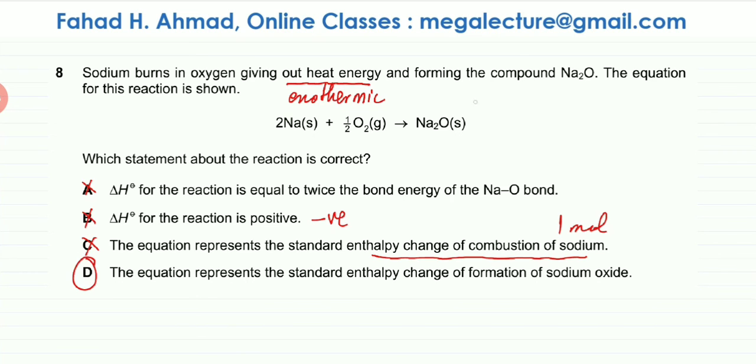D would be the correct option. Because it states the equation represents the enthalpy change of formation of sodium oxide. So enthalpy change of formation is when one mole of sodium oxide is formed from its elements. So the elements one mole is getting formed. So that is correct. And it's being formed from its elements, which are sodium and oxygen. So statement D by definition is going to be the correct statement for this question.